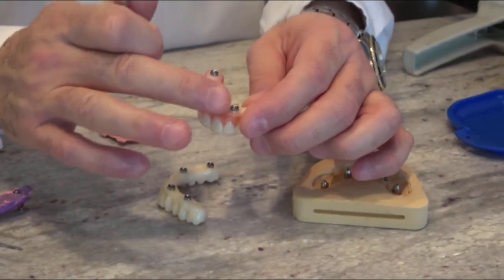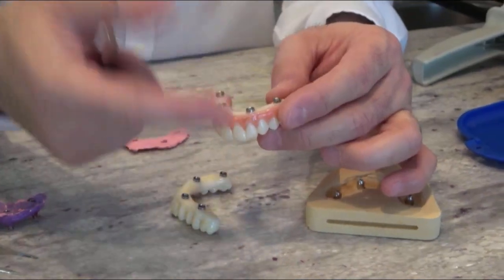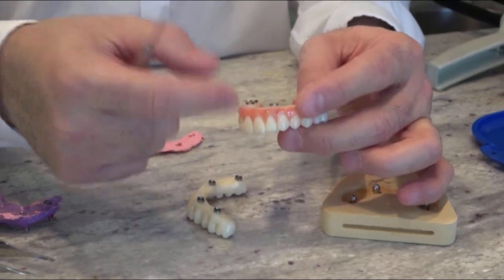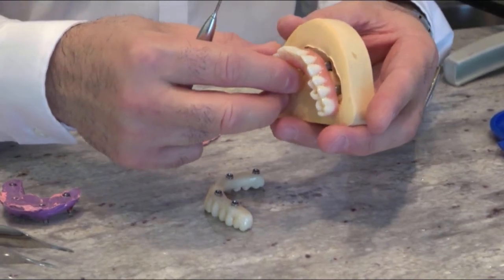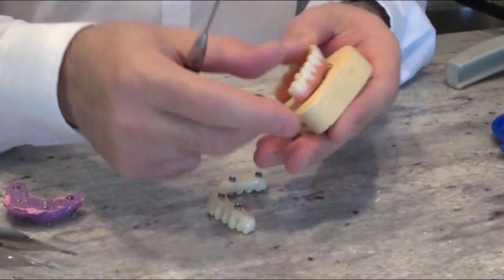So what you do, you just add composite here, condition the soft tissue, and once that's okay and it's cleansable, put it on the model like this.